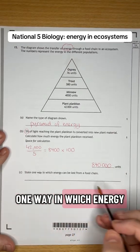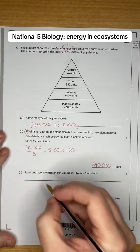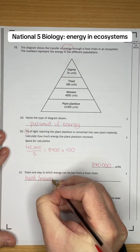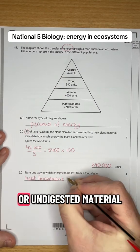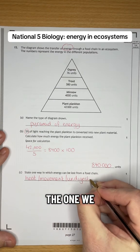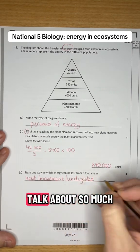State one way in which energy can be lost by a food chain. It can be lost by a number of ways. Heat, movement, or undigested material - the one we maybe don't talk about so much.